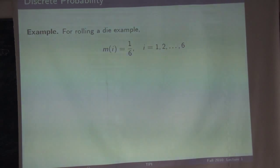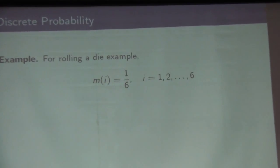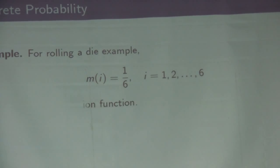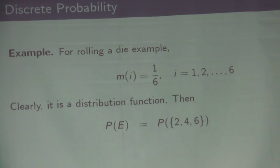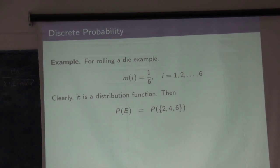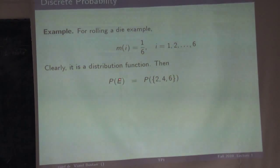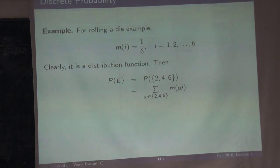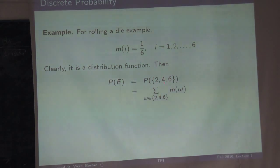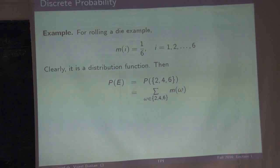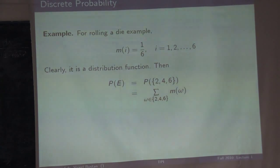Here is the distribution function defined formally. A distribution function for variable x is a function whose domain is omega, with two properties: the distribution function is always positive, and the sum of all possible outcomes gives you 1. Then for any subset, the probability of that subset is the sum of all distribution function values in that subset. For example, in die rolling, all values for all outcomes are 1/6. The sum of six of them equals exactly 1. If E = {2, 4, 6}, then P(E) = m(2) + m(4) + m(6) = 1/2.